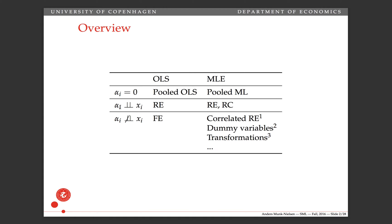When we allow for an alpha i but assume that it's completely independent of xi — of the observed x's — then we recall from our OLS setting that we could use the random effects estimator. But actually, just using pooled OLS gave us consistent estimates of the betas. It was just that our standard errors would be wrong; we would have heteroskedasticity. The random effects estimator is more efficient, but standard OLS is still consistent.